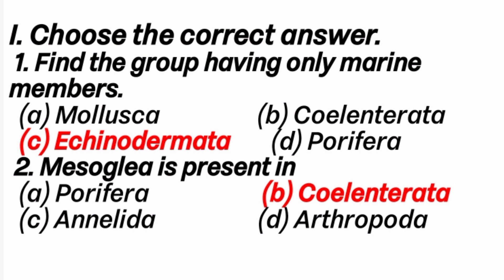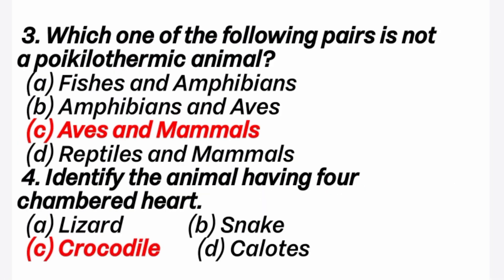Third question: which one of the following pairs is not a poikilothermic animal? Answer is C option, aves and mammals. Poikilothermic animals mean the animals which have variation in their body temperature. Aves and mammals are called homeothermic animals — their body temperature remains constant.